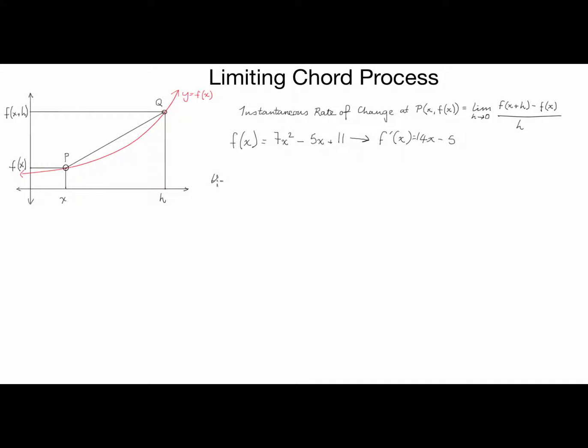Okay, so hopefully that means something to you. So we're going to take the limit as h approaches 0 of the function at x + h. Now what we do there is instead of writing x in the function, we write x + h, so it's going to be 7(x + h)² - 5(x + h) + 11.